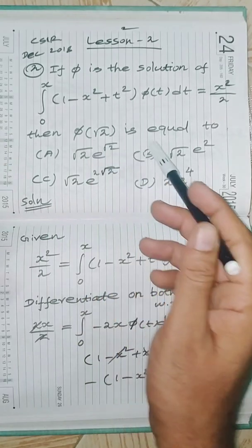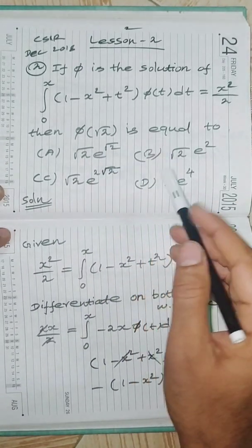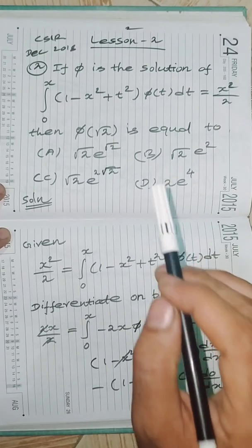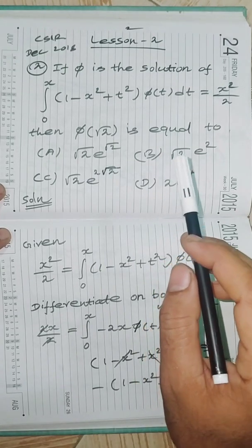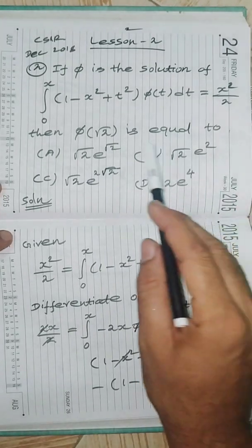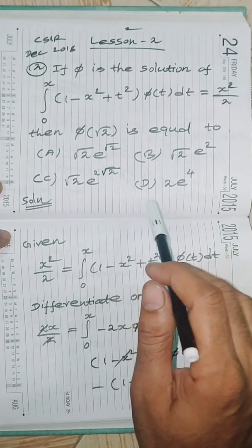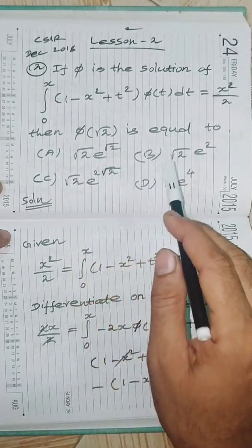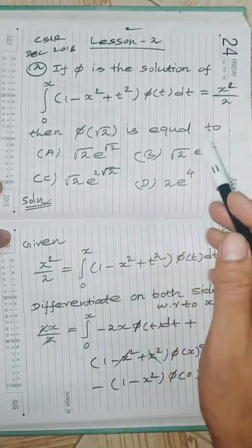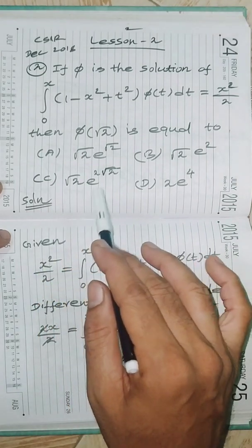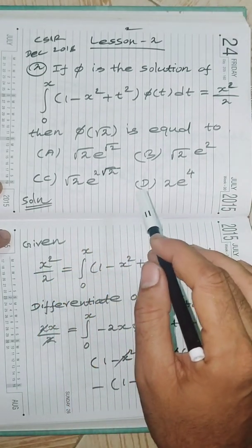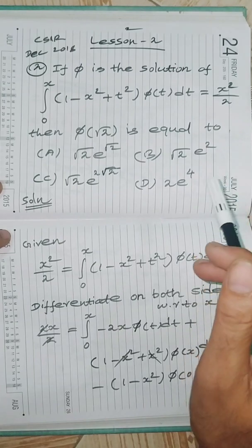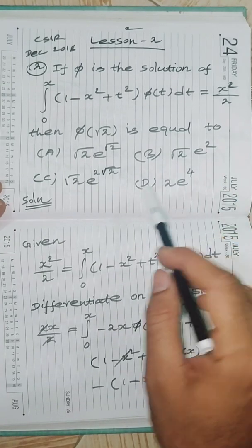We have to find π(√2). Four options are given: option one is √2·e^(√2), option two is √2·e², option three is √2·e^(2√2), and option four is 2·e⁴. We need to determine which is the correct option.